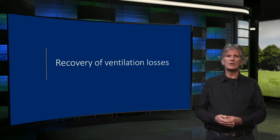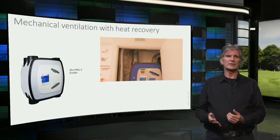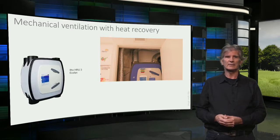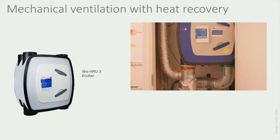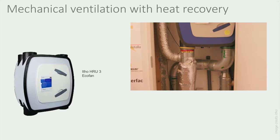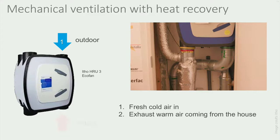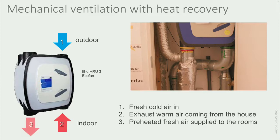Now let's look at the recovery of ventilation losses. It is fairly easy to recover the heat from the exhaust ventilation air, when there is a mechanical ventilation system with both mechanical air inlet and outlet. As you can see here, in the Pret a Leger house, a mechanical ventilation box is installed. It has four connections: fresh air coming in, warm waste air coming from the house, preheated fresh air supplied to the rooms, and cooled down waste air blown out.